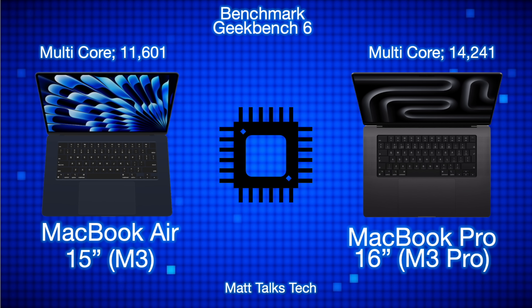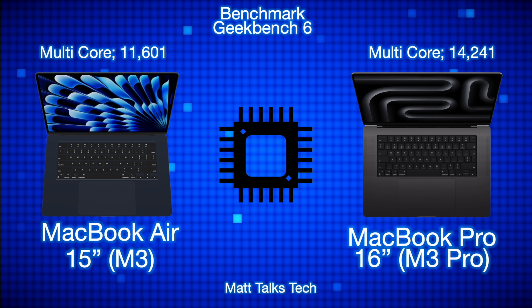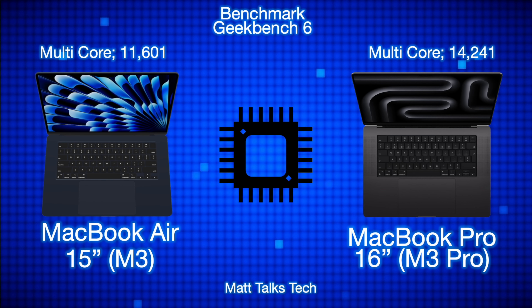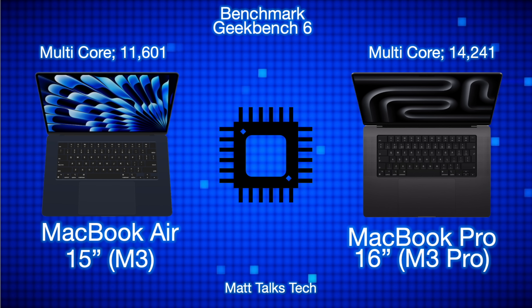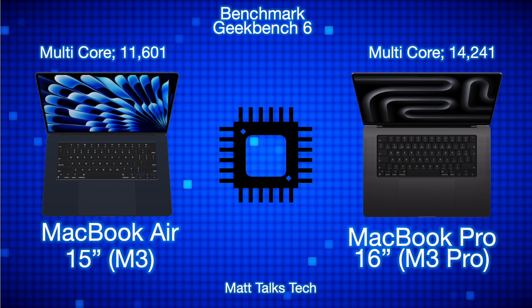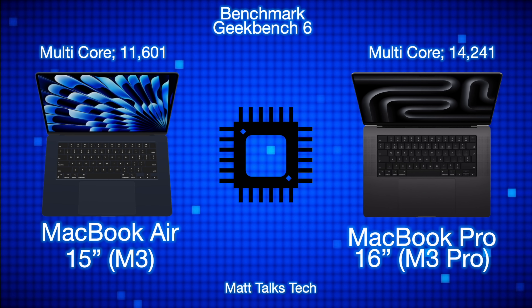In Geekbench 6 multi-core benchmarks, the MacBook Air M3 scores around 11,601 on average, while the MacBook Pro 16-inch with M3 Pro scores around 14,241. That's approximately a 3,500 to 4,000 point difference, giving you a clear idea of the performance gap between these two machines.